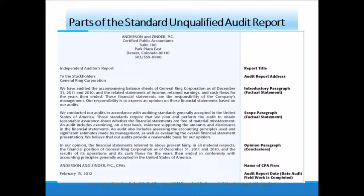The standards on unqualified audit reports include seven parts: report title, report address, introductory paragraph, scope paragraph, opinion paragraph, name of CPA firm, and report date.